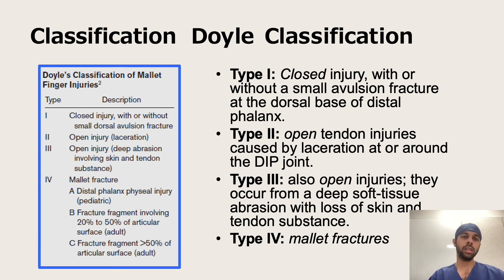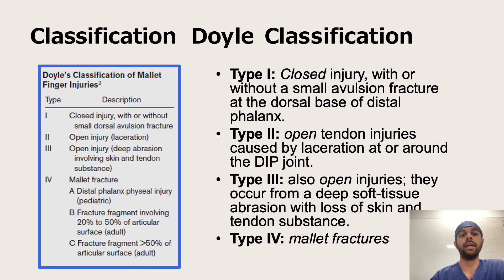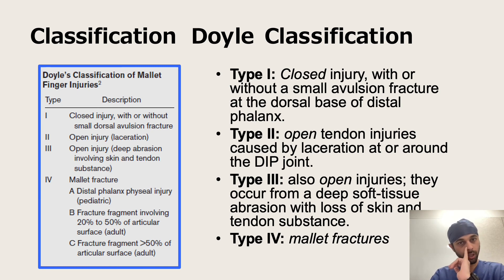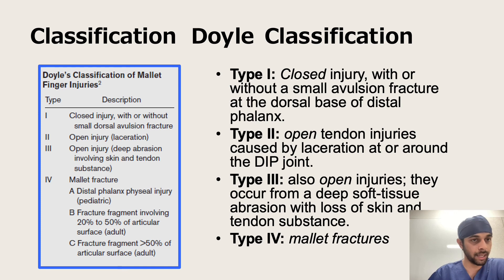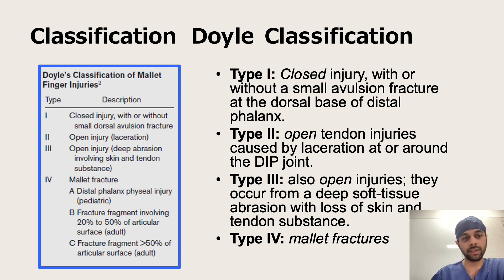The Doyle classification divides mallet finger into 4 types. Type 1: closed injury without a bony avulsion fracture of the dorsal base. Type 2: open tendon injuries caused by laceration at or around the DIP. Type 3: open injuries from deep soft tissue abrasion without skin loss and with tendon substance loss. Type 4 is mallet fractures, subdivided into A, B, and C — Type A is a distal phalanx physeal injury in pediatrics; Type B is a fracture fragment involving 20–50% of the articular surface in adults; Type C involves fragments more than 50% of the articular surface in adults.